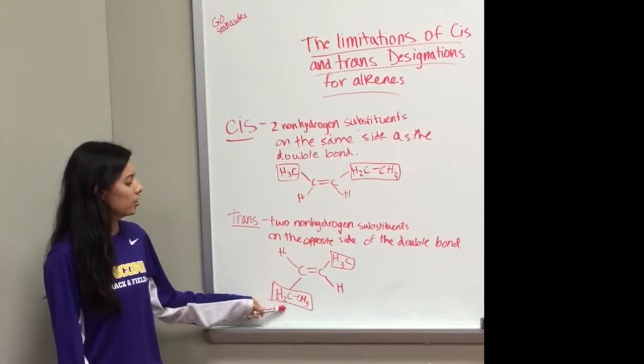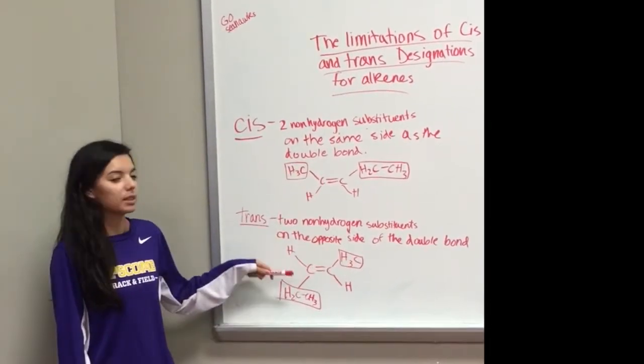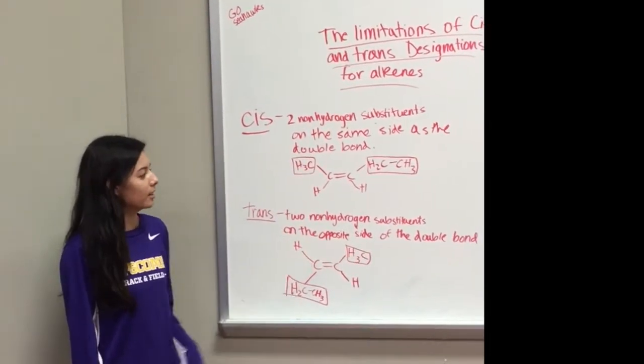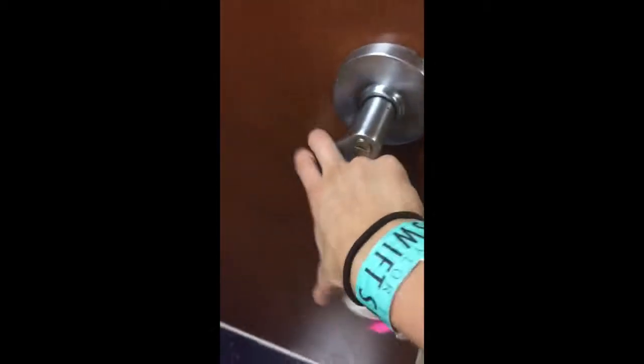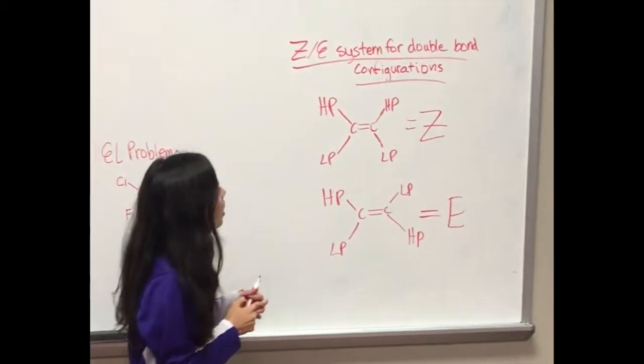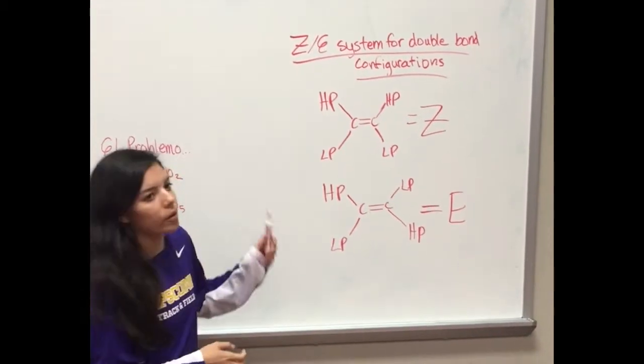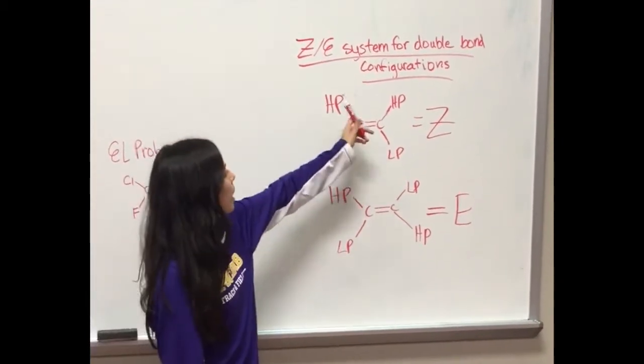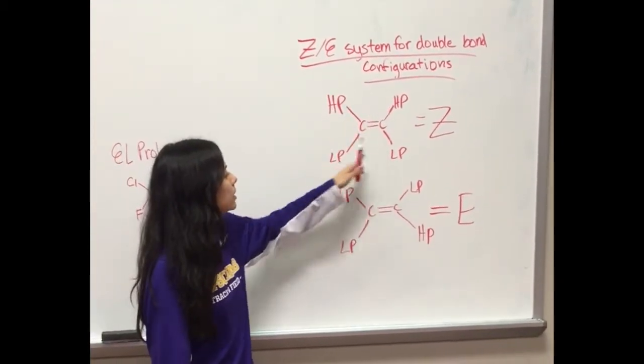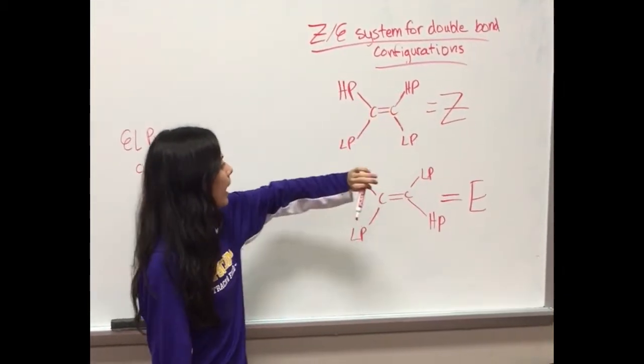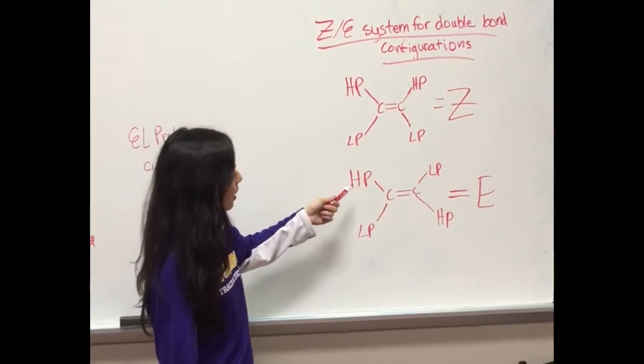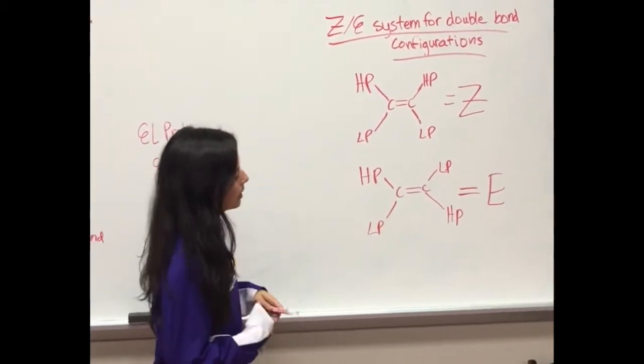Z/E system for double bonds. If both of the upper bonds are high priority over these two, then it's Z because they're on the same side. And then if they are on opposite sides of the double bond, then it's E.